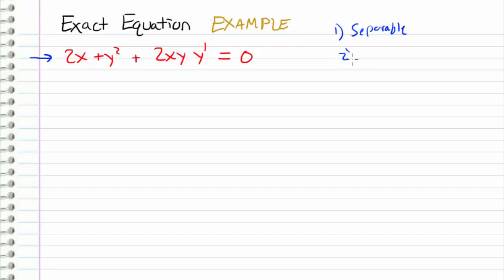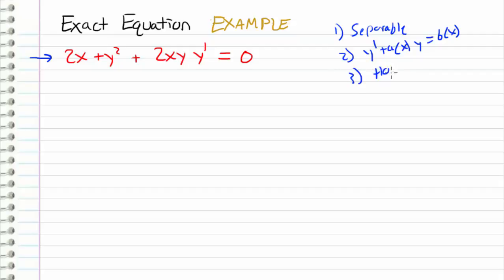If it's not separable, but it is of the form y prime plus a of x times y equals b of x, then I know I can solve this with an integrating factor. But we can see that this differential equation is neither separable nor of this form. So the next thing we want to check is whether it fits the homogeneous form — that is, whether we can express y prime as a function of y over x. We can see that we cannot do that in this case either.